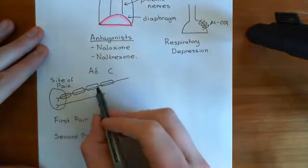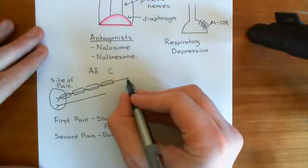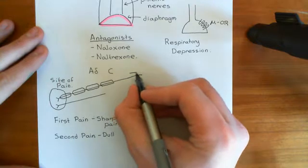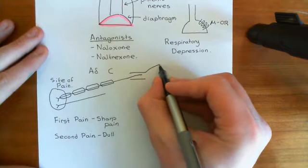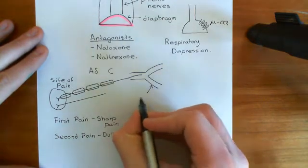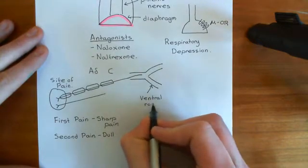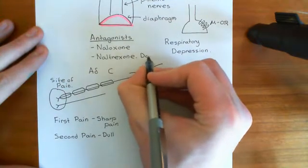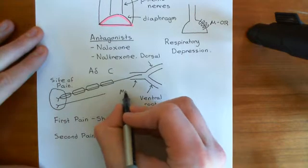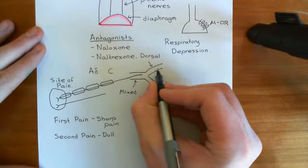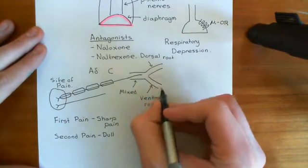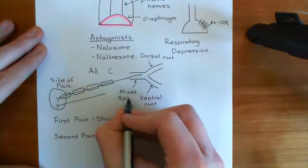We'll just look at one fibre type since the pathway is the same for both — we'll continue with the A-delta fibre. The A-delta fibre comes in through a mixed spinal nerve, which splits into the ventral root and the dorsal root. Mixed spinal nerves that emerge from the spinal cord are formed by the joining of the dorsal root and the ventral root. The dorsal root carries the sensory fibres coming in, and the ventral root carries the motor fibres coming out.